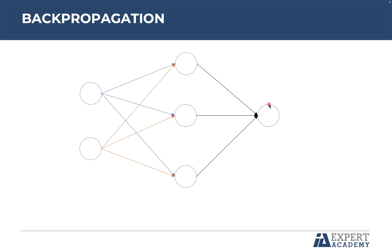The backpropagation algorithm will update the weights of each one of these connections. First, we change the weights from the hidden layer to the output layer, and then we change the weights from the input layer to the hidden layer. This algorithm has this name because it does the reverse process — it propagates the weights from the output layer to the input layer, from right to left.